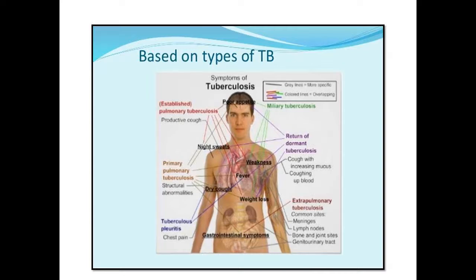If the person has primary pulmonary tuberculosis, he will have weakness, fever, dry cough, weight loss, night sweats, and poor appetite. If a person has tuberculosis where the pleural surface is involved, then the person will have dry cough, fever, cough with increasing mucus, and the person can cough up blood. In case of extrapulmonary tuberculosis, the common sites will be meninges, lymph nodes, bone and joint, and genitourinary tract.